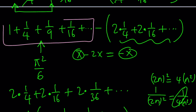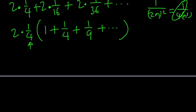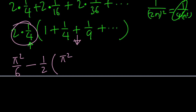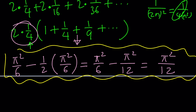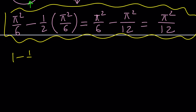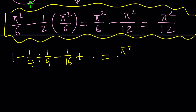So now we have π²/6 minus (1/2)(π²/6), which equals π²/6 minus π²/12. Making a common denominator gives us π²/12. That is the sum of this infinite alternating series, thanks to Euler. To summarize: 1 minus 1/4 plus 1/9 minus 1/16, and so on, equals π²/12.